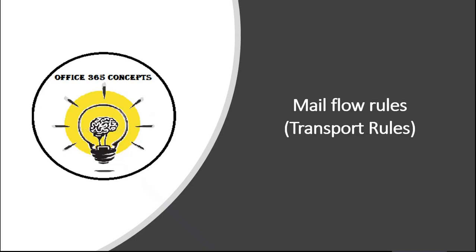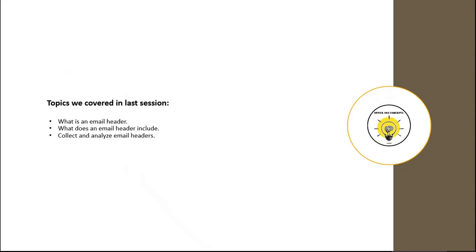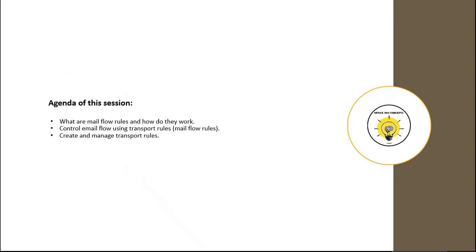Hi guys and welcome to the next video of this series. In this video I will be discussing what are mail flow rules or transport rules in Exchange Online. In the last session we discussed what is an email header and how we can collect and analyze it. In this session I will be discussing how you can control email routing using mail flow rules and how we can manage mail flow rules from Exchange Admin Center and from PowerShell.